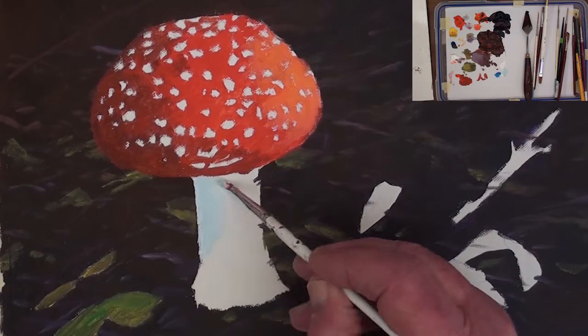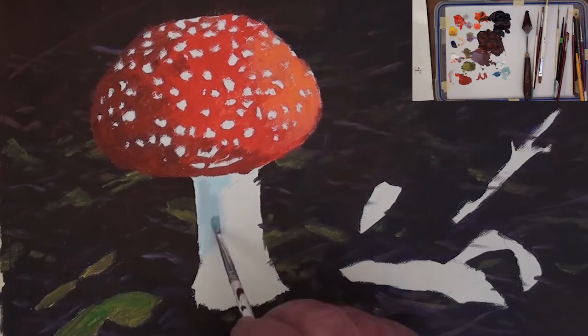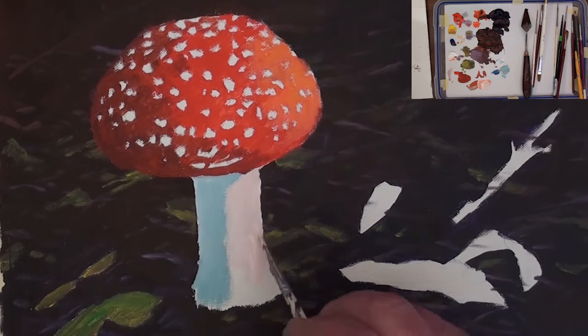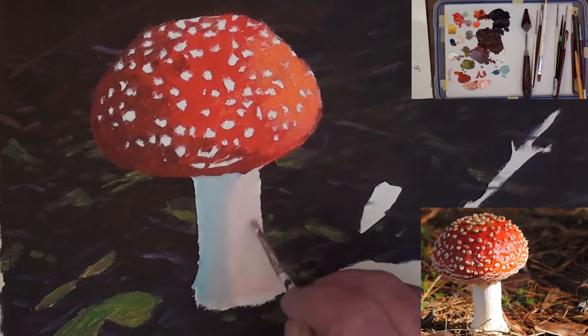Now paint some light blue on the shadow side of the stem. Then add a light pink to the sunny side. Softly blend the two together in the center.